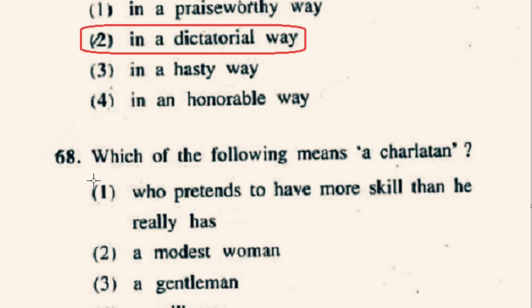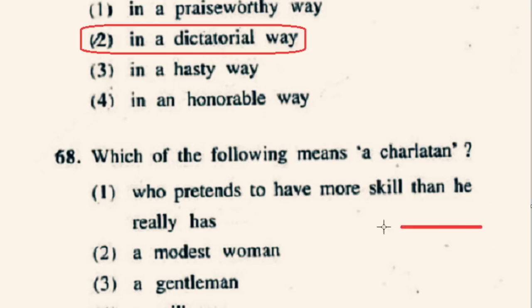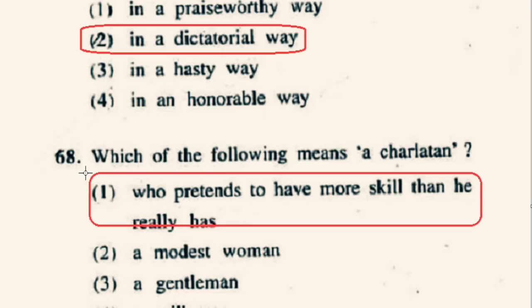Question number 68: Which of the following means a charlatan? Charlatan means an imposter, cheat or pretender. So the correct meaning of charlatan from the given options will be option 1st: one who pretends to have more skill than he really has.